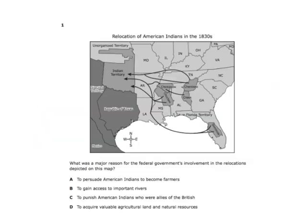A map shows arrows from the southeast pointing to Indian territory. What was a major reason for the federal government's involvement in the relocations depicted? To acquire valuable agricultural land and natural resources. White Americans wanted this land for agriculture and natural resources, so they took the Indians' land and forced them onto Oklahoma territory.